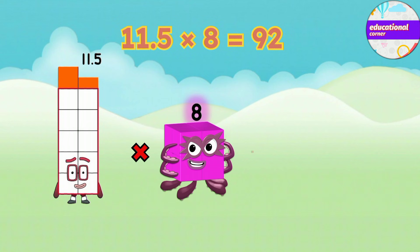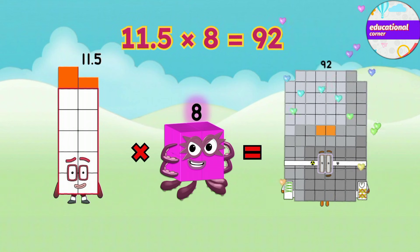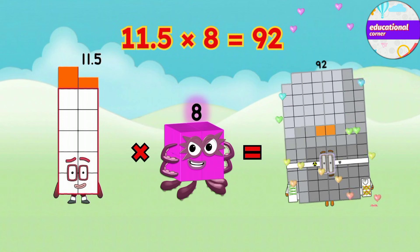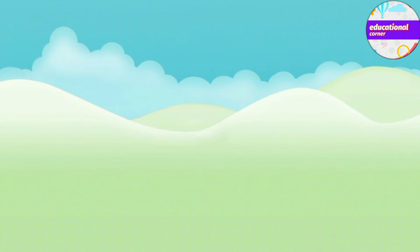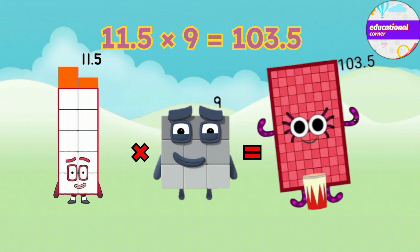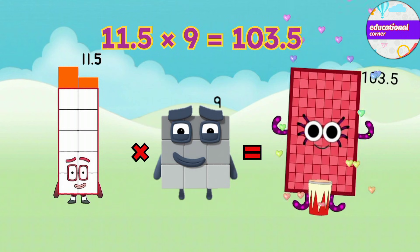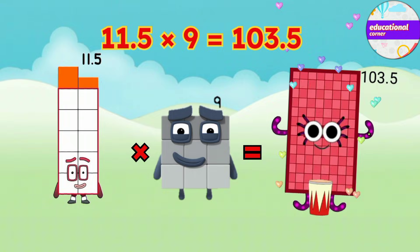11.5 x 8 equals 92. 11.5 x 9 equals 103.5.